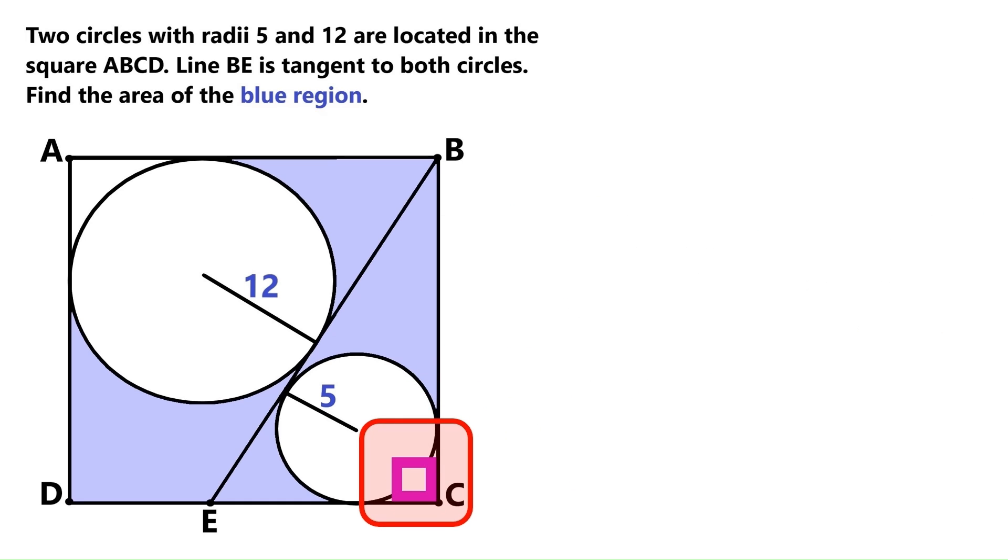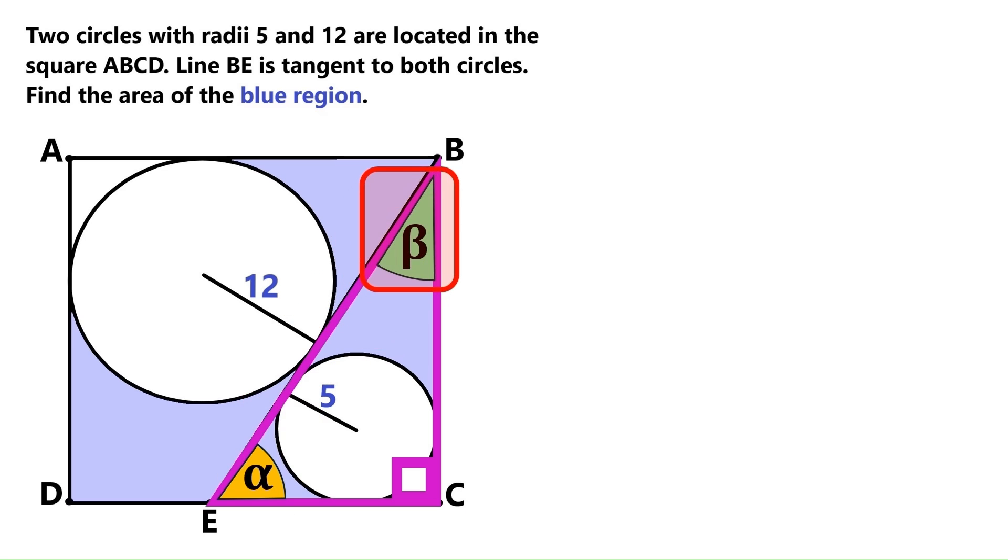We've got a right angle here, because it's the vertex of the square. That means this triangle is a right triangle. Let's call this angle alpha, and we'll call this angle beta. Alpha and beta add up to 90 degrees, because they are the interior angles of the right triangle.